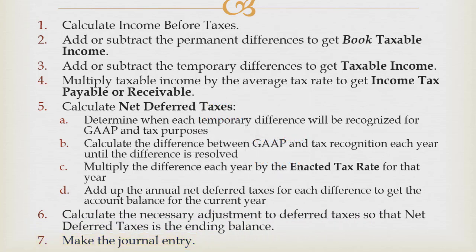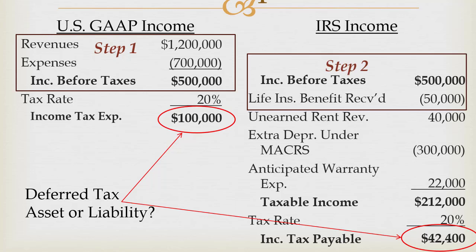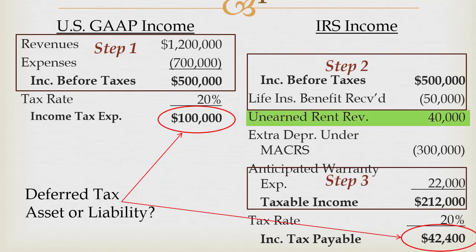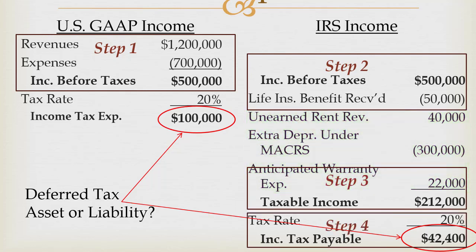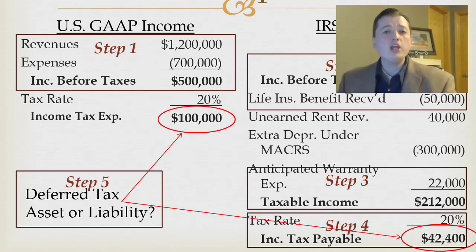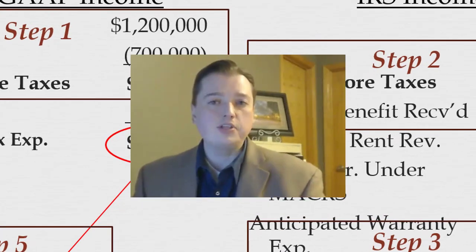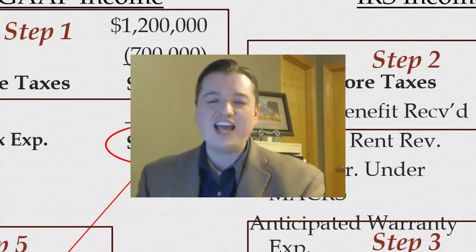This list can look really intimidating, but let me show you how it works in our example. We had those differences between GAAP and IRS income, and they walk right through our steps. Step one is income before taxes; step two takes out the permanent differences — in this case, just the life insurance; step three takes out unearned rent revenue, extra depreciation, warranty, etc. to get to taxable income; step four gives us income taxes payable; and step five figures out the deferred tax asset and liability. From there it's just plugging and chugging into the journal entry. In our next segment we'll actually work through examples of deferred taxes and finally do a journal entry.